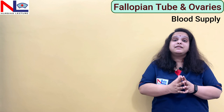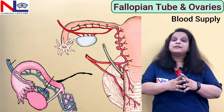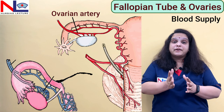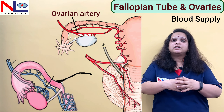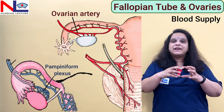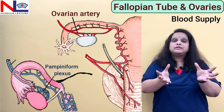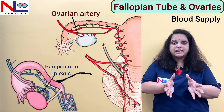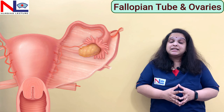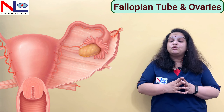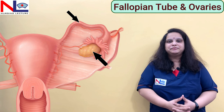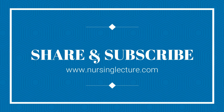The blood supply of the ovary: arterial supply is mainly through the ovarian artery, which is a branch of the abdominal aorta. All deoxygenated blood is drained into the pampiniform plexus surrounding the ovary, which drains into the ovarian vein. So in this lecture we have covered the remaining two internal organs: the fallopian tube and the ovaries. Thank you.